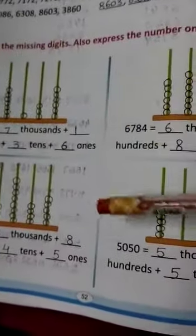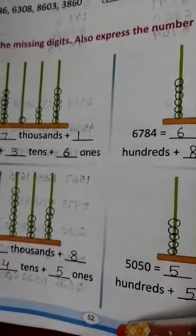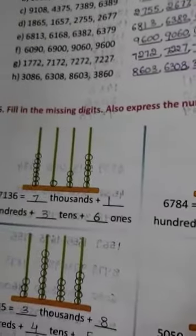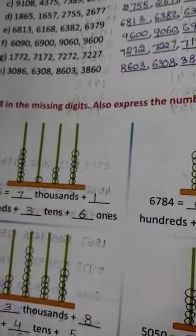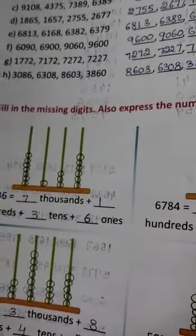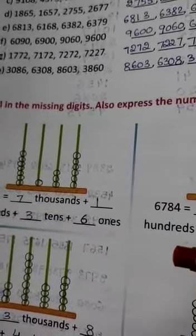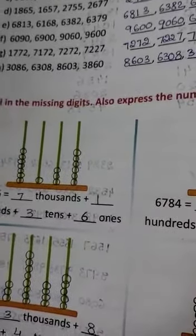Hi children, very good morning to the third class students. Open your textbook page number 52. Yesterday we discussed descending order. I want you to practice ascending order and descending order, so check and practice those concepts.